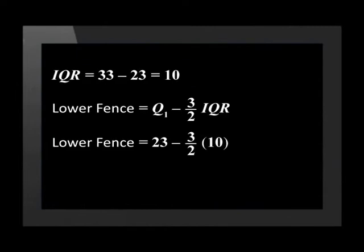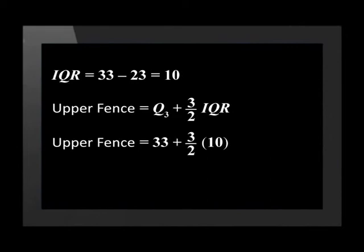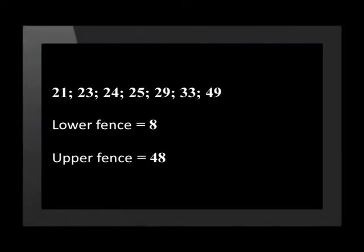The lower fence will be equal to 23 minus 3 over 2 times by 10. This is equal to 8. The upper fence will be equal to 33 plus 3 over 2 times by 10. This is equal to 48. Now that we know the values of the upper and lower fence, let's look at our values again. There are no values that are lower than the lower fence. There is one value that is higher than the upper fence. This means that 49 is an outlier.